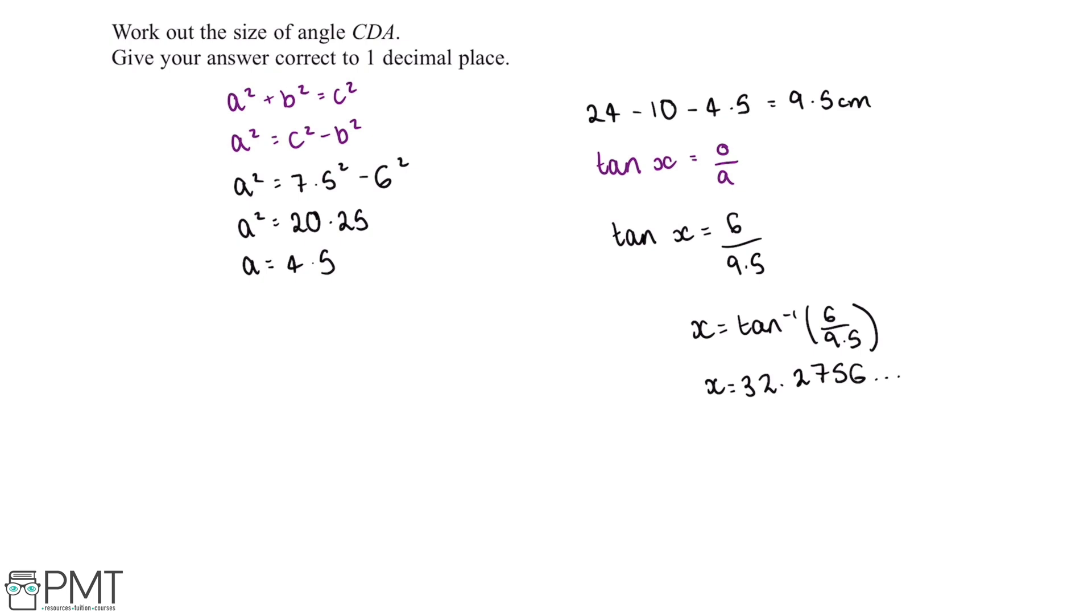Now this question wants us to give our answer correct to one decimal place. So 32.2756 to one decimal place gives us a value of x which is 32.3 degrees. And this is our final answer.